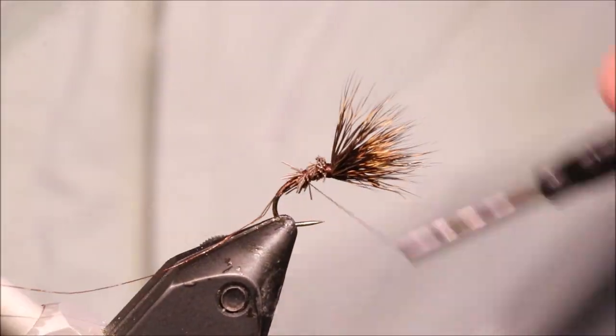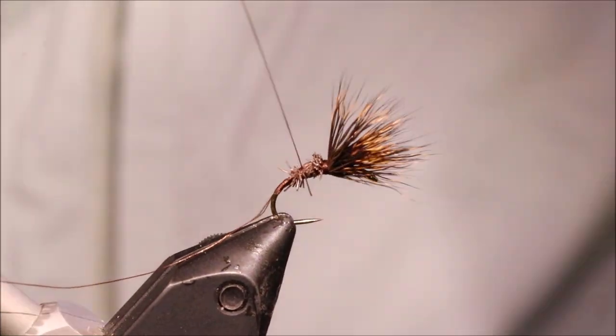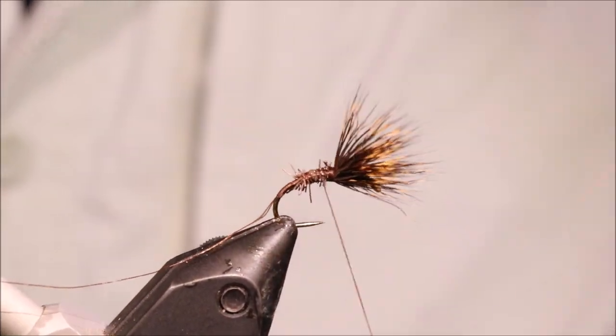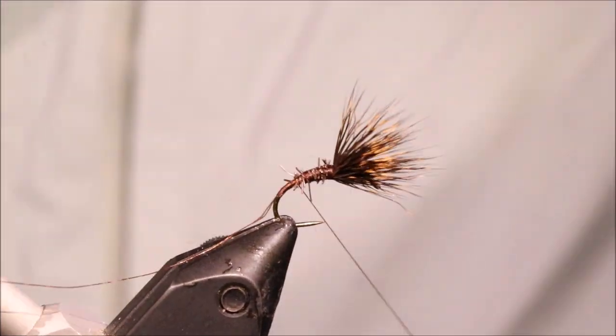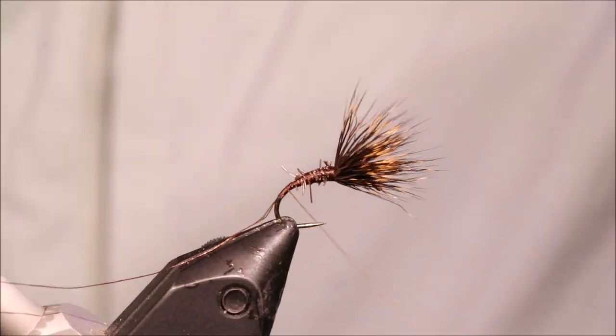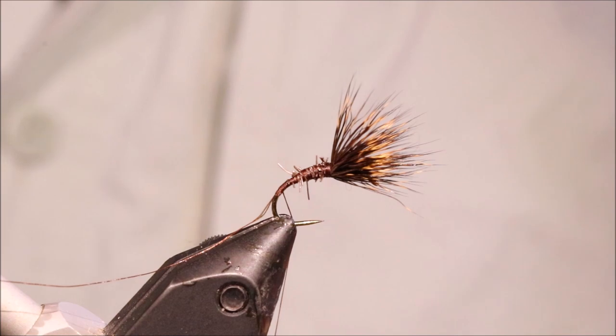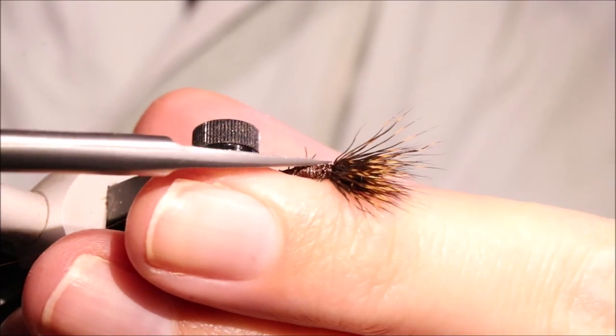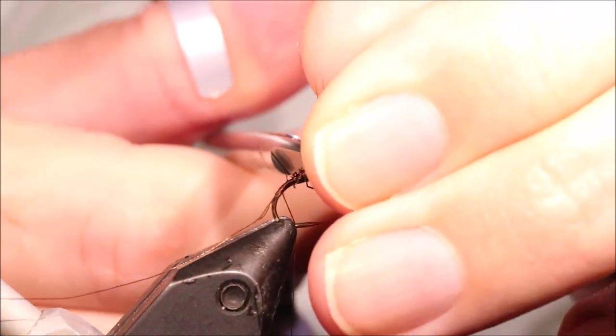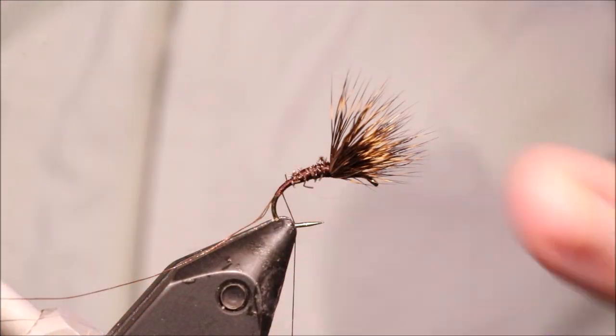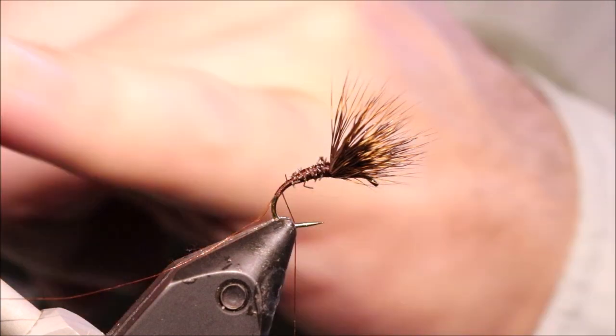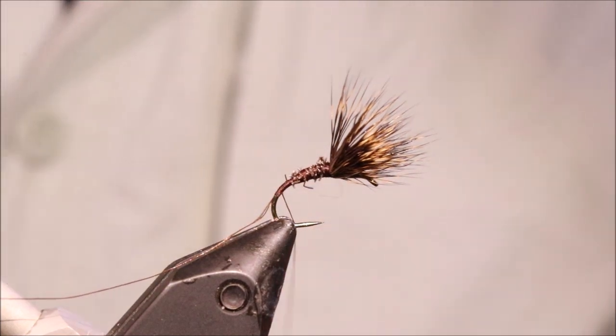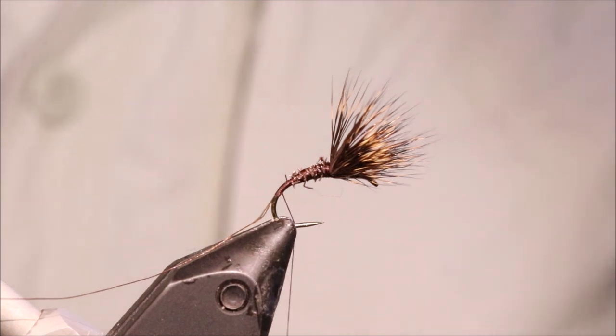I'm just going to tidy up these butts. I've trimmed them so that there's a taper. Now, another way to tie this is you tie the wing in after the abdomen and leave the butts sticking up as a wee shoulder, and that can be quite nice. I'm going to use the original pattern here.